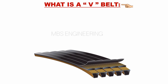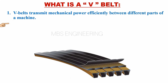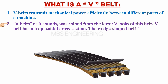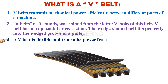We will learn and understand what is V-belt. V-belts transmit mechanical power efficiently between different parts of a machine. V-belts, as it sounds, were coined from the letter V look of this belt. V-belt has a trapezoidal cross section. The wedge-shaped belt fits perfectly into the wedged groove of a pulley. V-belt is flexible and transmits power from one shaft to another.